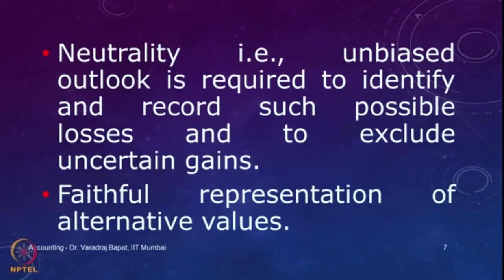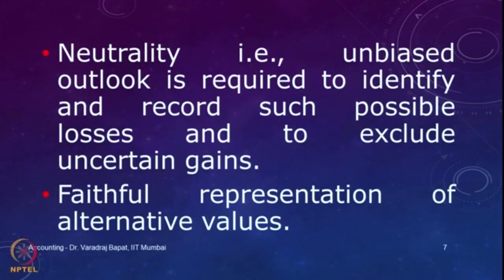The second characteristic is neutrality. An unbiased outlook is required to identify and record such possible losses and to exclude all uncertain gains. When you are sitting in the chair of managing director or as a manager, there is a likelihood that you would like to show better results and more profits. But the accountant is supposed to be neutral — the accountant needs to have an unbiased view and ensure that any slight chance of loss is identified and recorded, while whatever profits or gains are recorded should have 100 percent certainty. Any possible uncertain gain should be excluded.